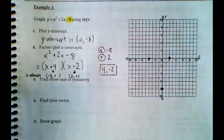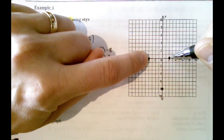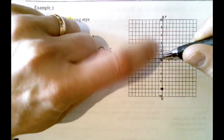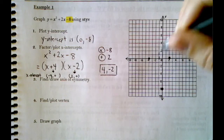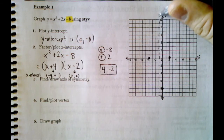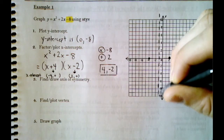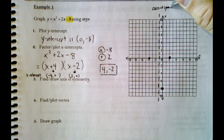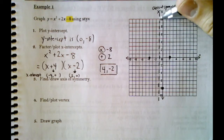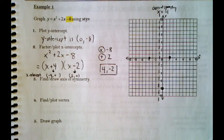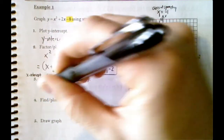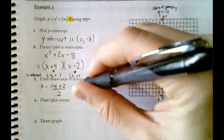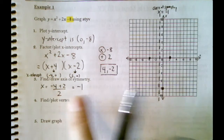To find the axis of symmetry, start at both x-intercepts and move one space at a time toward the middle — they meet at −1. The math confirms this: −4 + 2 = −2, divided by 2 = −1. So the axis of symmetry is x = −1.